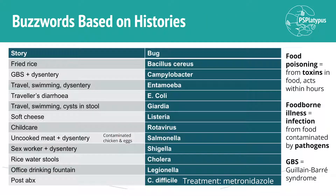Now a table of buzzwords. A few brief things to note: think rice — rice is a cereal — Bacillus cereus. Guillain-Barré syndrome is an autoimmune neurological disorder that can be set off by infection, and that includes Campylobacter infection — Campylobacter pylori especially.